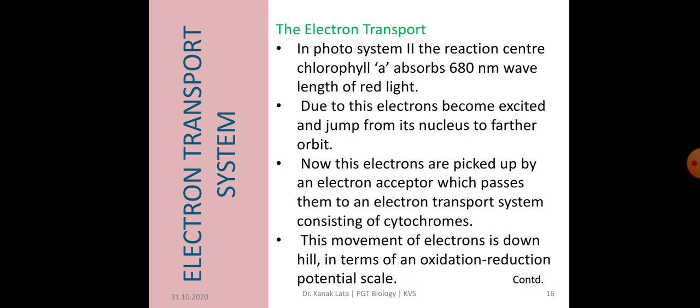which passes them to an electron transport system consisting of cytochromes. The movement of electrons here is downhill in terms of an oxidation-reduction or redox potential.